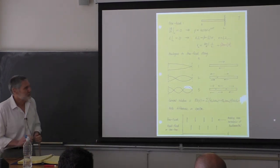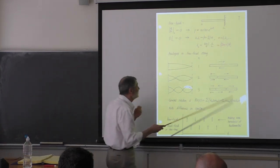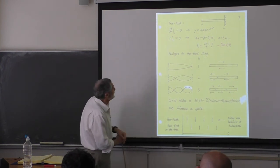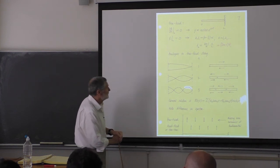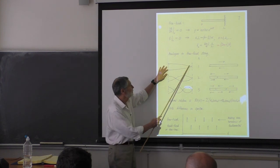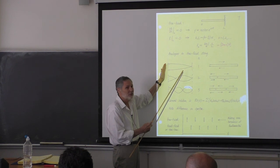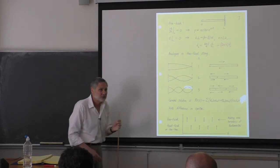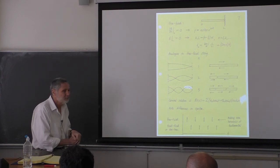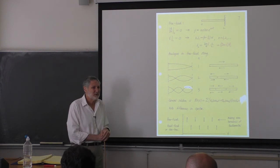Next: mixed boundary conditions — free and fixed. These are going to be just like a string. We get a quarter wavelength here, so we're half the frequency down. The fundamental is half the frequency compared to before, because of the mixed boundary conditions.